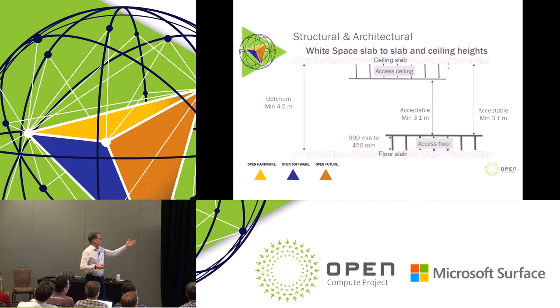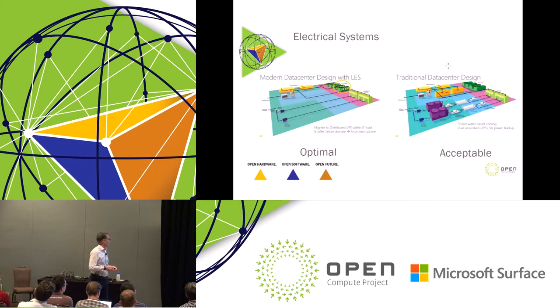We try to give some guidance of what it would be great to have, but if you can't achieve that then you can get away with 3.1 meters. We've also looked at the space under the access floor and given some guidance around 900 millimeters if you were using that as a cooling pathway, but if not then 450 would be sufficient.